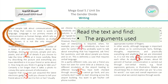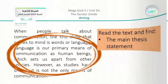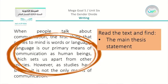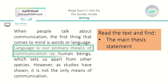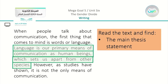Now we need to read the text and find the arguments used — what types of arguments appear in the passage. Focusing on the first paragraph, we can clearly find that the main thesis statement is: 'Language is our primary means of communication as human beings, which sets us apart from other species.' So what makes us different from other species is language as a way to communicate.